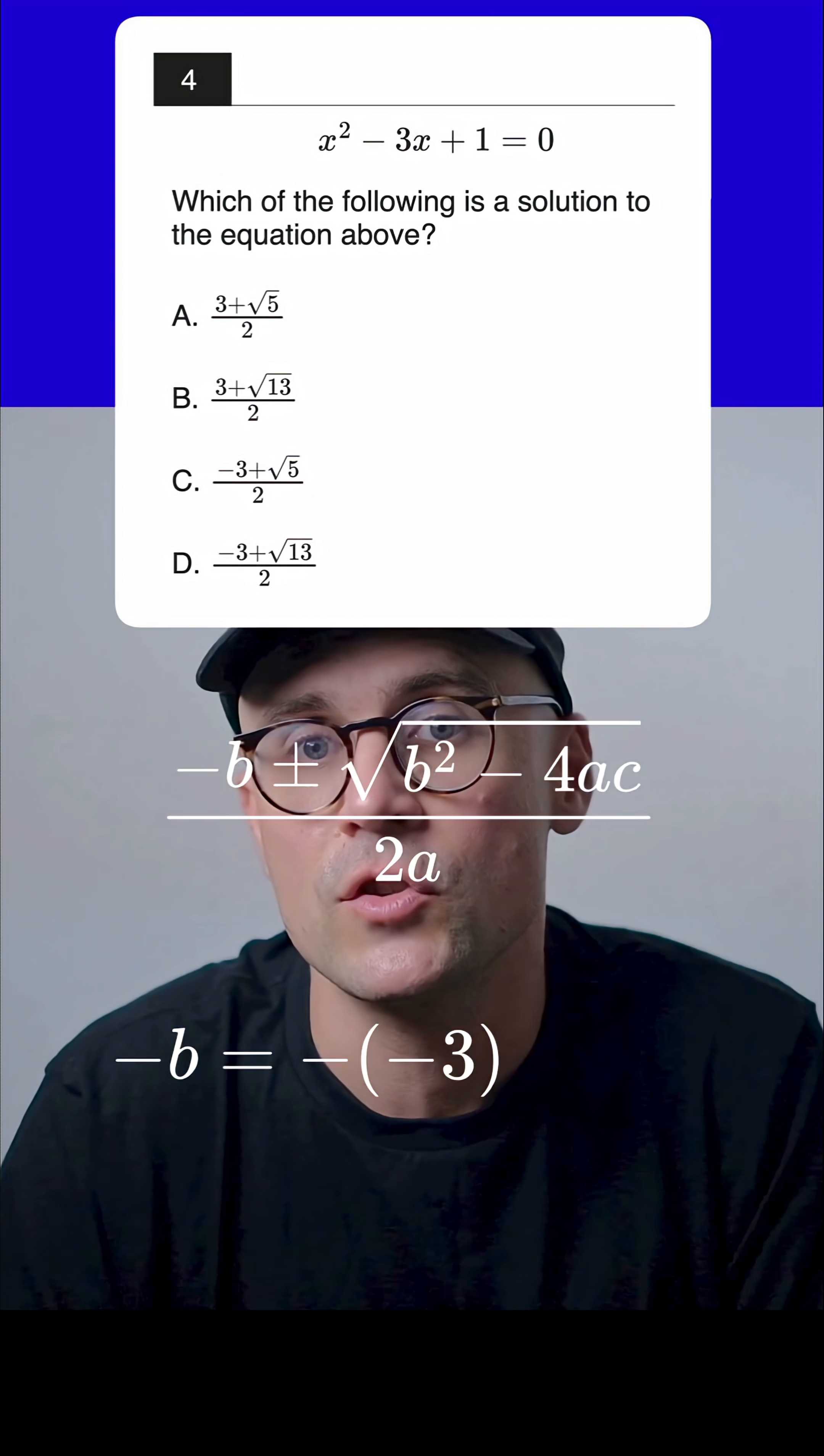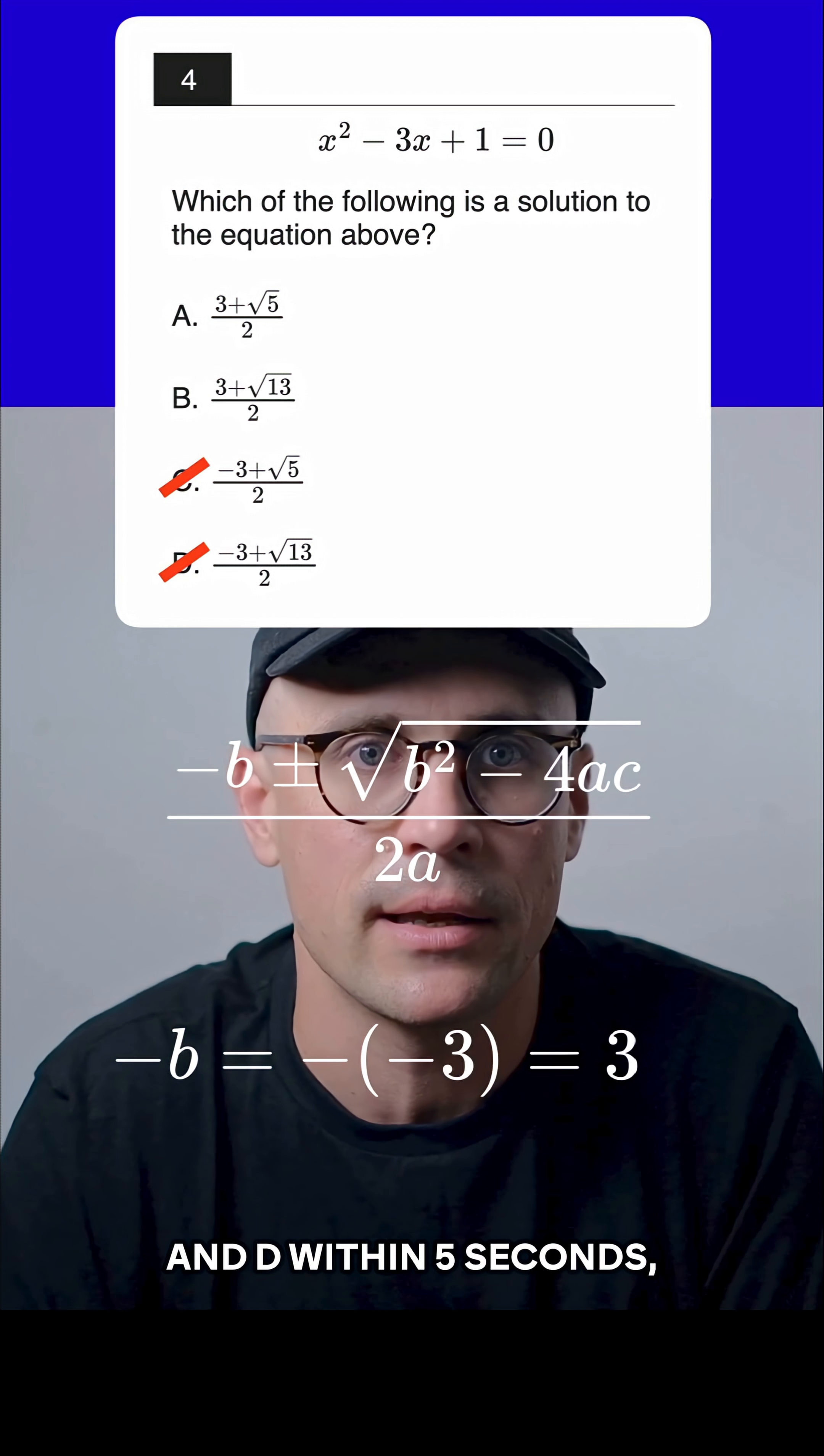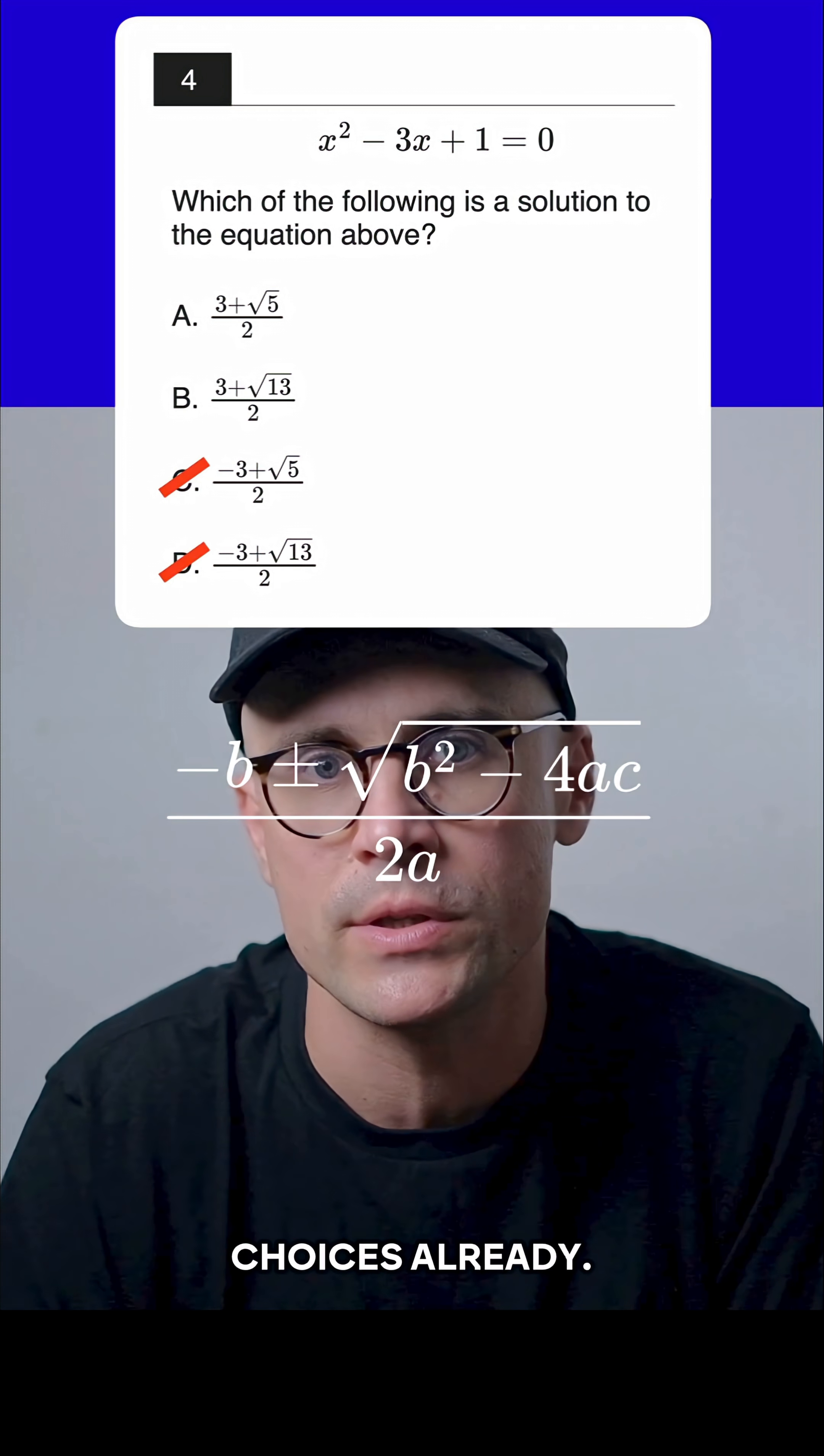Minus b is minus minus 3, which is 3, so we can eliminate answers C and D within 5 seconds, and we're down to 2 answer choices already.